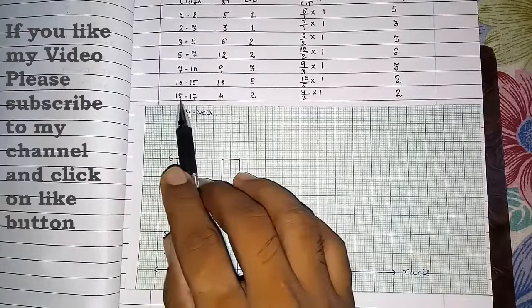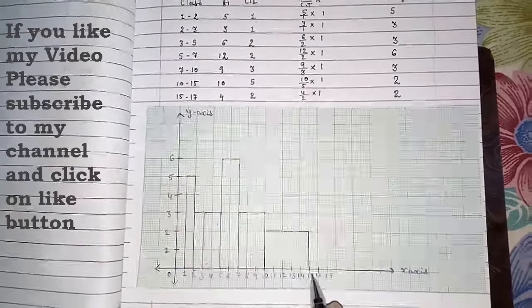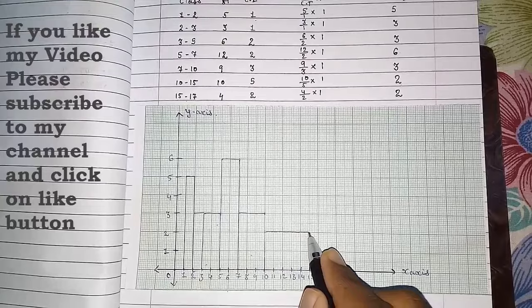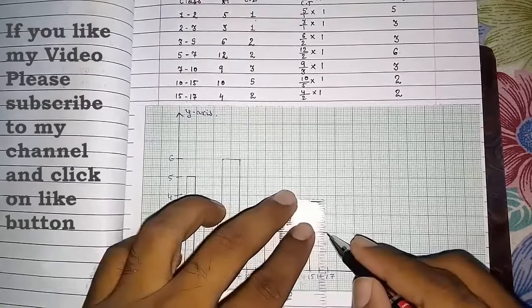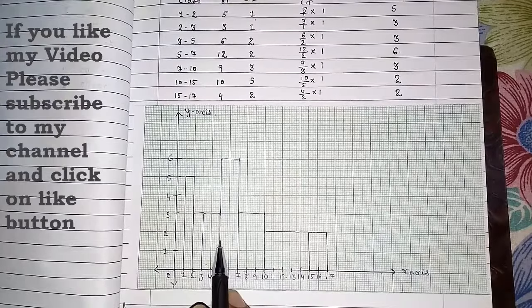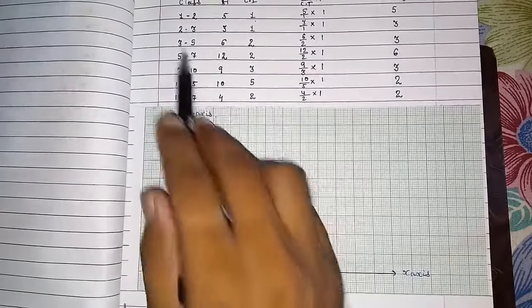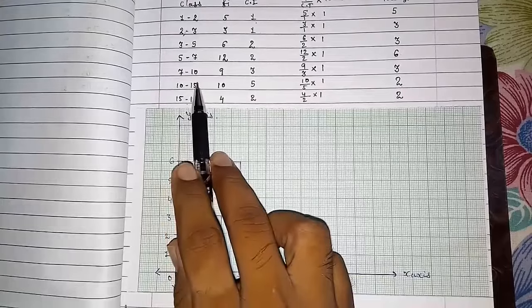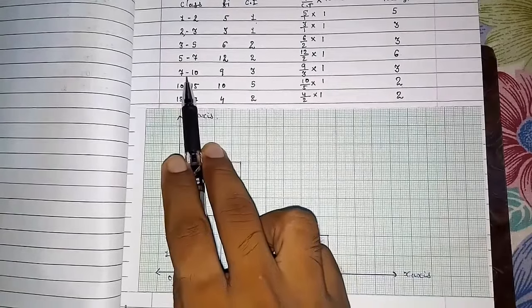And look here. Now 15 to 17 is 2. So again 15 to 17 we have to move. So this way we have to represent or draw the graph when the classes are not same or you can say having class interval different.